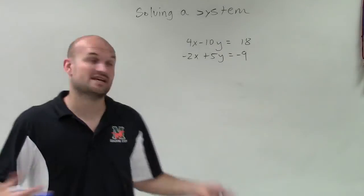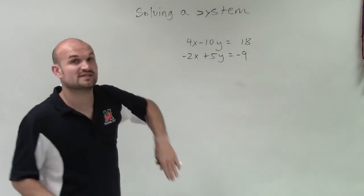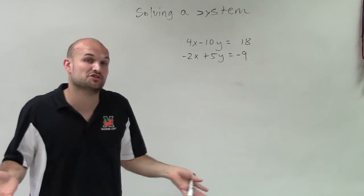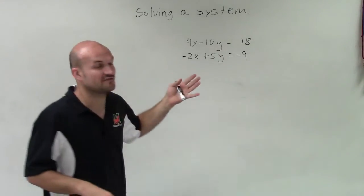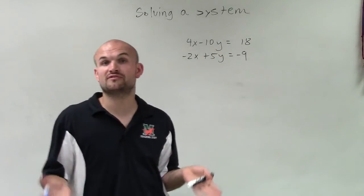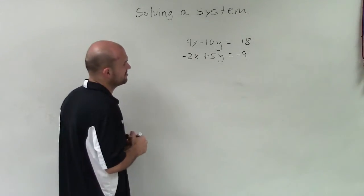OK. So here's going to be another example where they just say solve the system, and I need to choose the method that I'd like to do. Well, since I do not have any of my variables isolated, or with the coefficient of 1 or negative 1, I'm going to apply elimination.